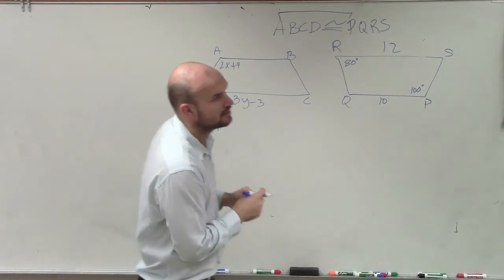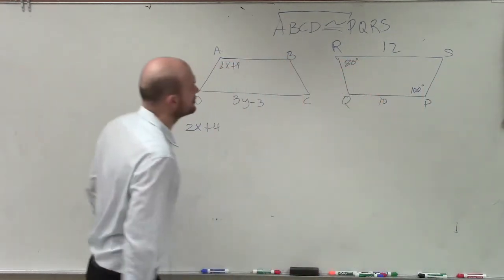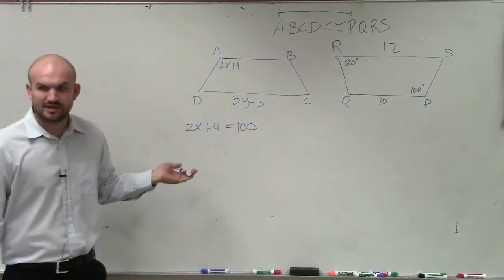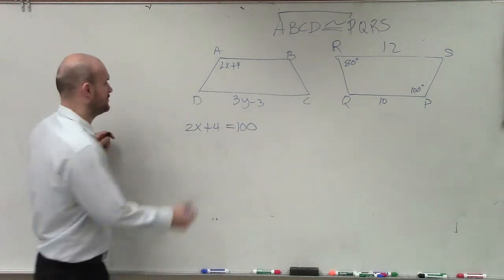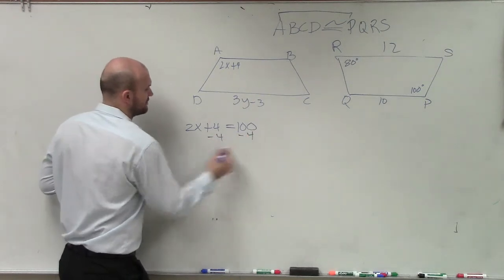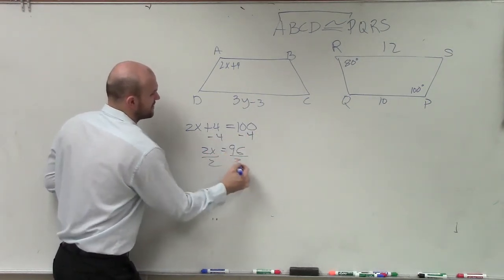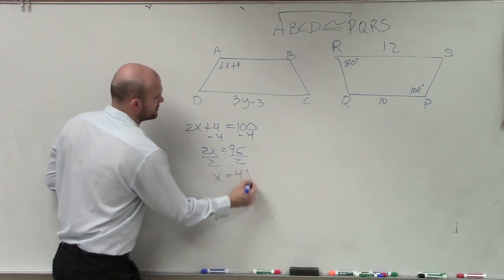Hello. Oh, OK. Very good. 2x plus 4 equals 100. Can you guys solve for x by now? Yes. Yeah, of course you can. Subtract 4, subtract 4. 2x equals 96. Divide by 2, divide by 2. x equals 48.